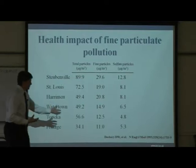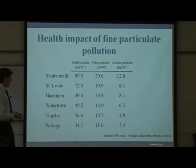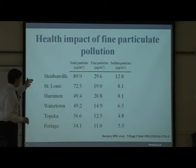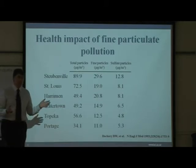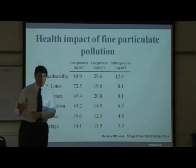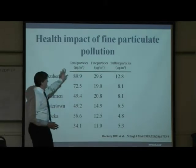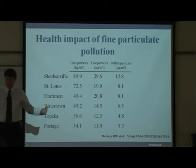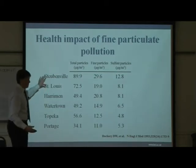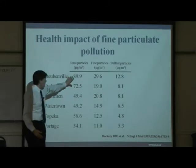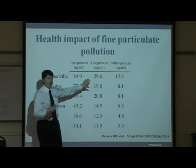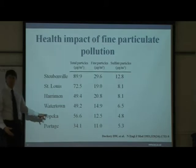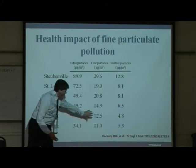The Six City Study — the landmark paper published in the New England Journal of Medicine in 1993 — looked at mortality and morbidity in six communities within the United States from the mid-1970s until the late 1980s. The concentrations of different types of pollution were measured over that extended period — a roughly 16-year average. Steubenville and similar industrialized areas had high levels of total particles, fine particles, PM2.5, and sulfate particles, while Topeka and Portage were relatively clean rural or low-index cities with much lower concentrations.